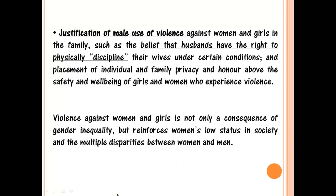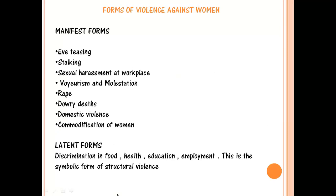Concluding this section: violence against women and girls is not only a consequence of gender inequality but also reinforces women's low status in society and gives rise to multiple linked disparities between women and men. Now discussing the forms of violence against women, we can divide them into two types: manifest forms, which are visible, and latent forms, which are not visible.